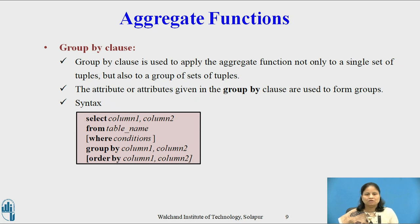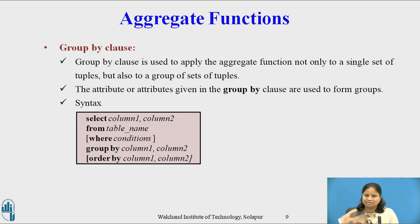Group By clause is used to apply the aggregate function not only to a single set of tuples but also to a group of set of tuples. The attribute or attributes given in the Group By clause are used to form groups. Tuples with the same value on all attributes in the Group By clause are placed in one group. Syntax: SELECT column1, column2 FROM table_name WHERE condition GROUP BY column1, column2 ORDER BY column1, column2. Square brackets indicate optional clauses, so WHERE and ORDER BY are optional.